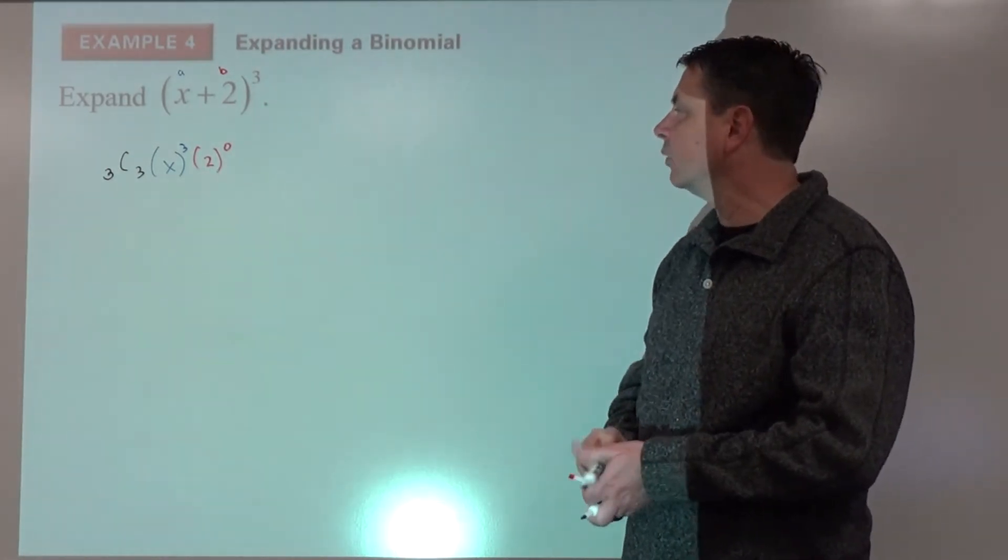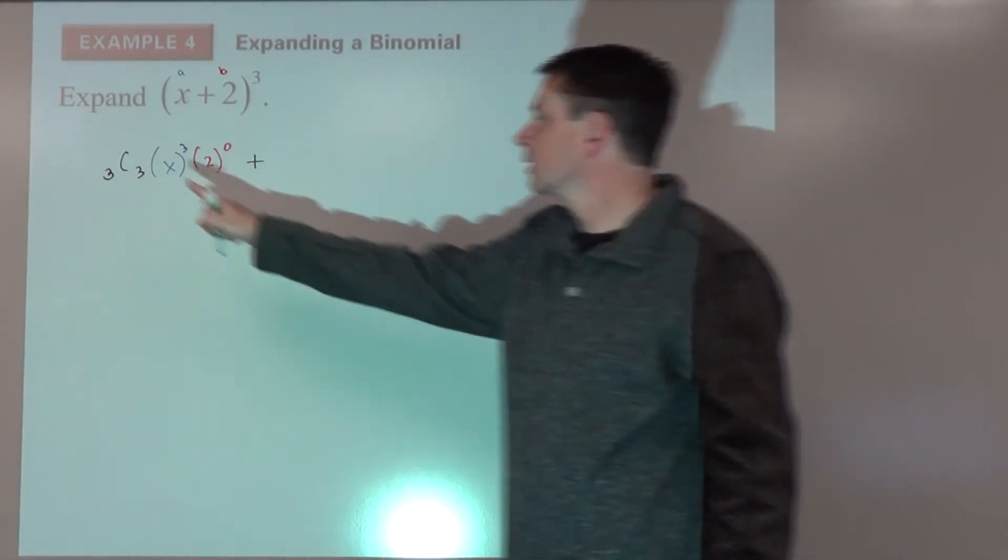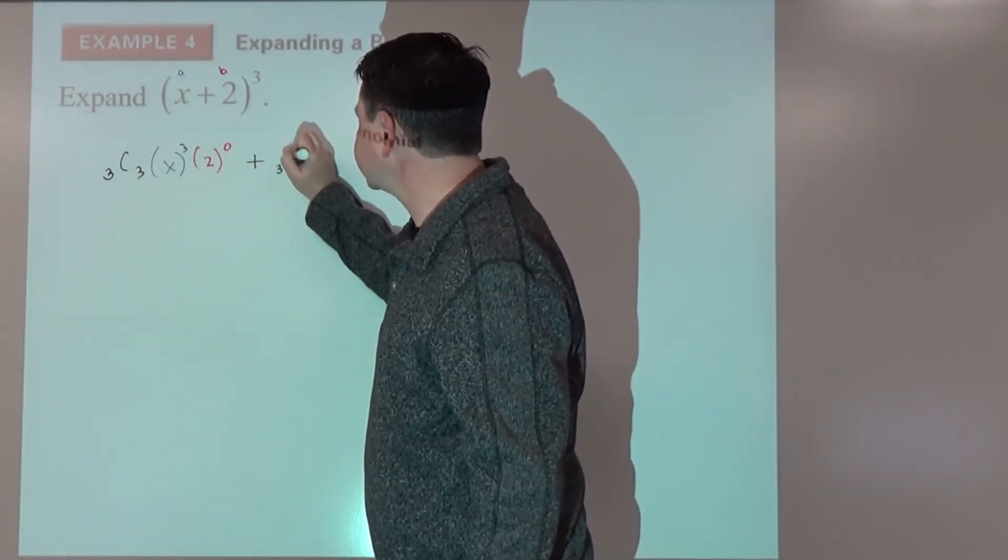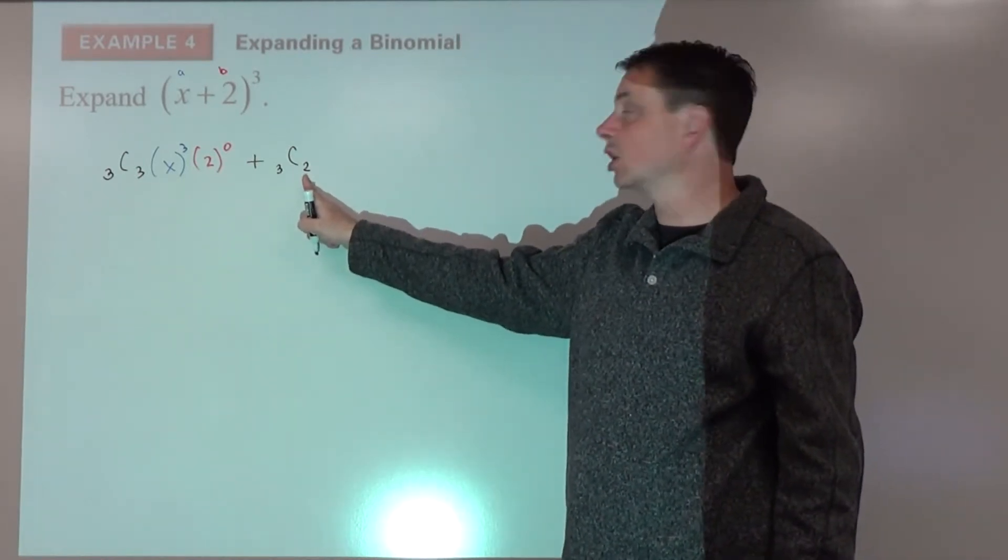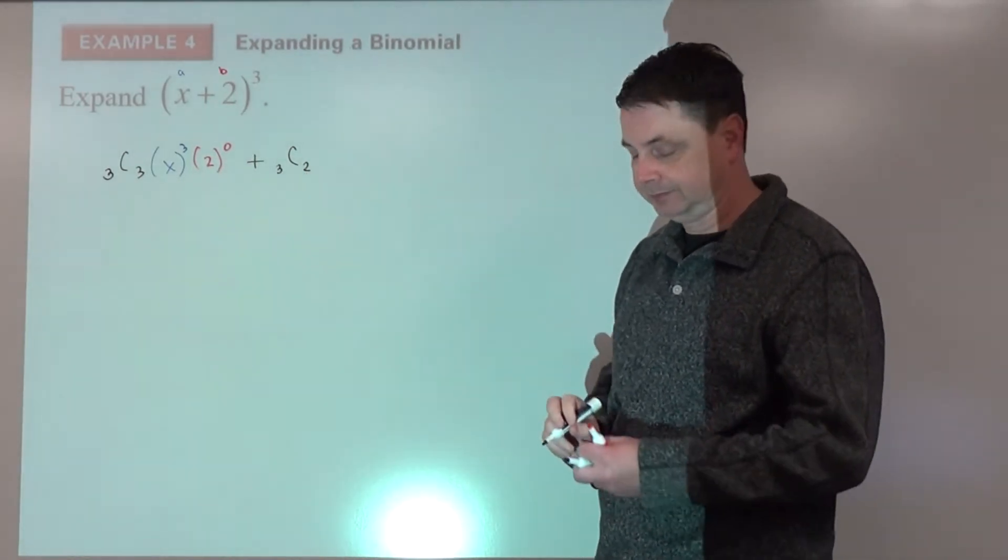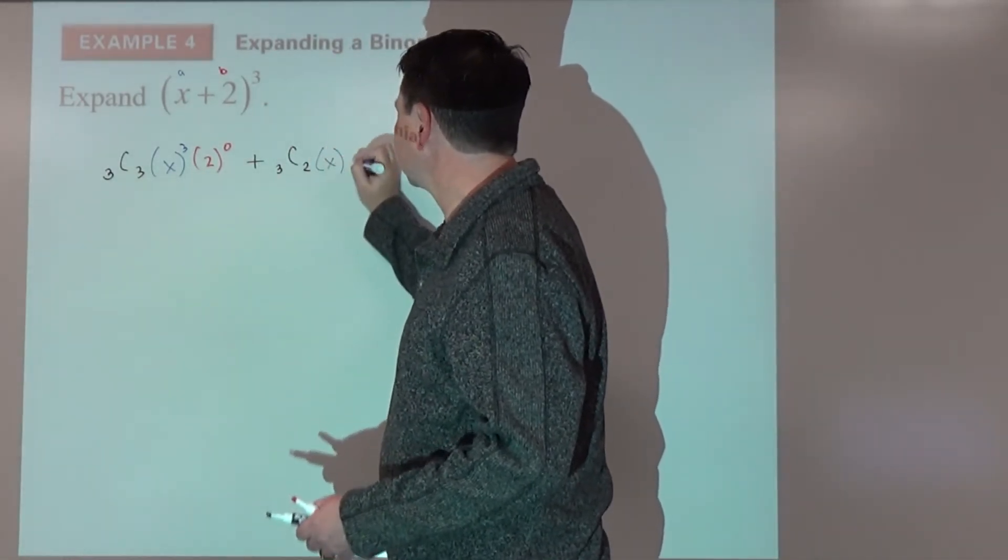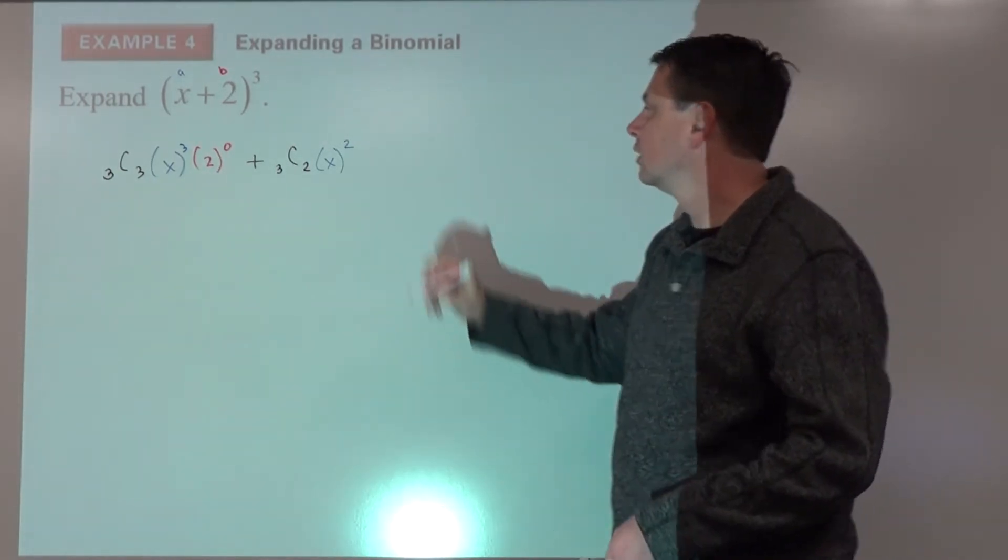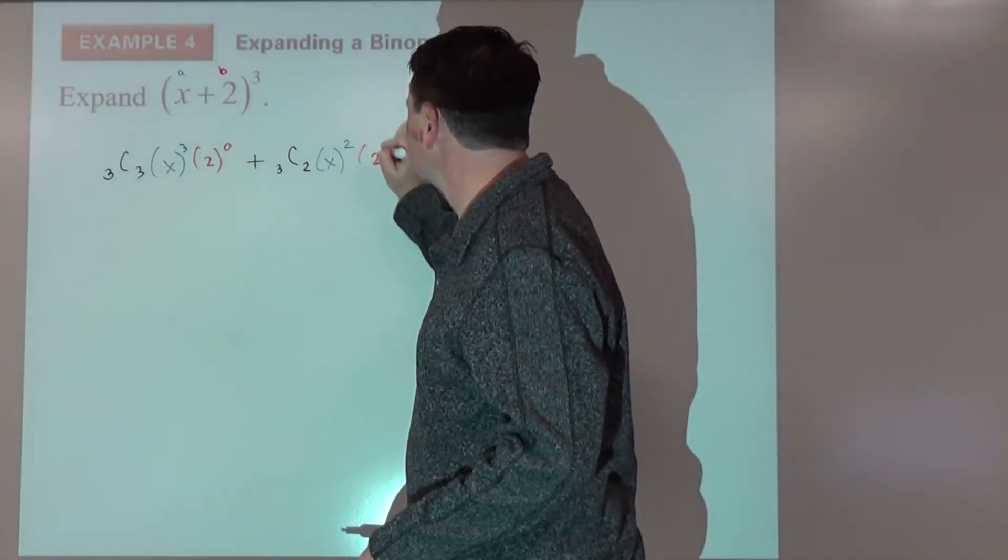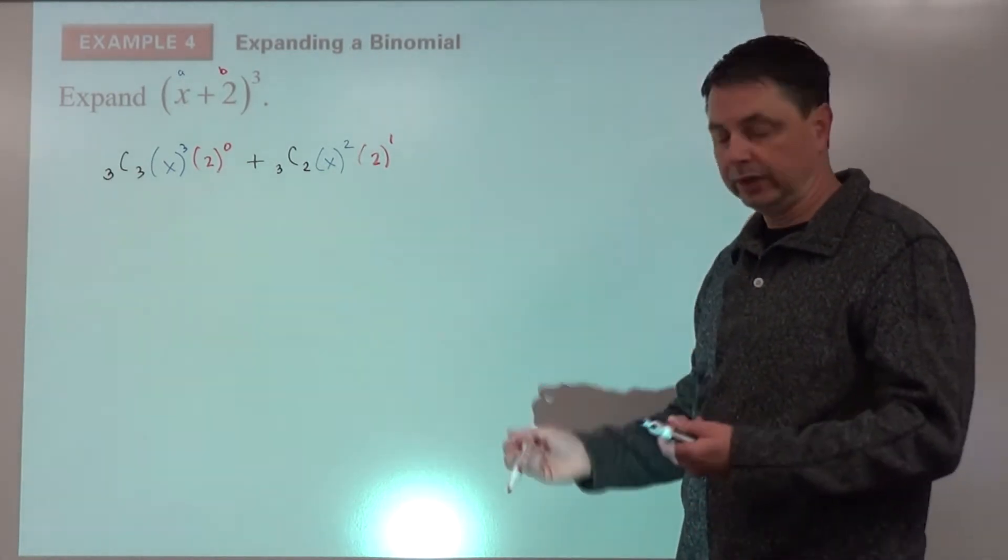To that we will add, moving on to the next term, combination 3 choose, now we're choosing, there from our combination goes down by 1. Power for a goes down by 1, whereas the power for b comes up by 1.